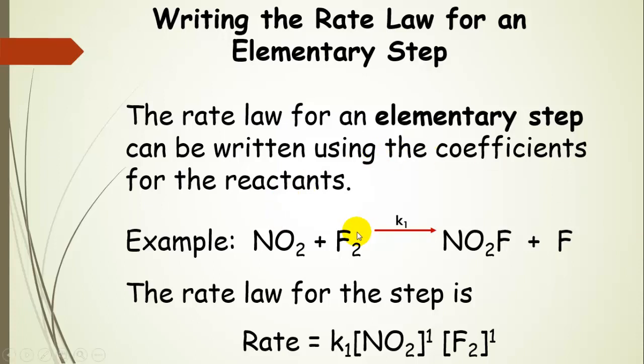For example, we have nitrogen dioxide reacting with fluorine to produce our products, and this is an elementary step. It's the very simplest step we can possibly write. Notice that the rate constant is labeled with a number, a subscript number. That would be the rate constant for step one, for instance.